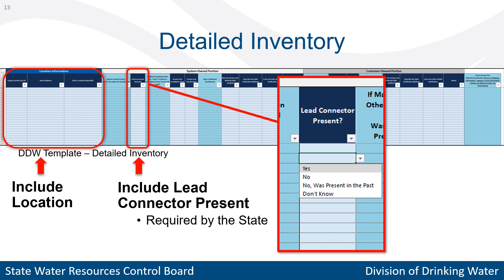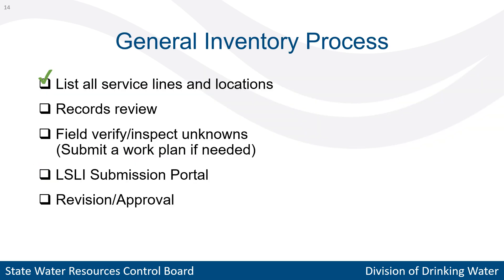Here's a very simplified breakdown of the inventory process. First, make a list of all the service lines and locations in the system. Second, gather and review any records that might indicate service line materials, line size, and dates for installations, repairs, and replacements — try to identify as many service lines as possible using records. Third, identify all the remaining unknowns with a field inspection, meaning you physically go to the service line to see what it is.